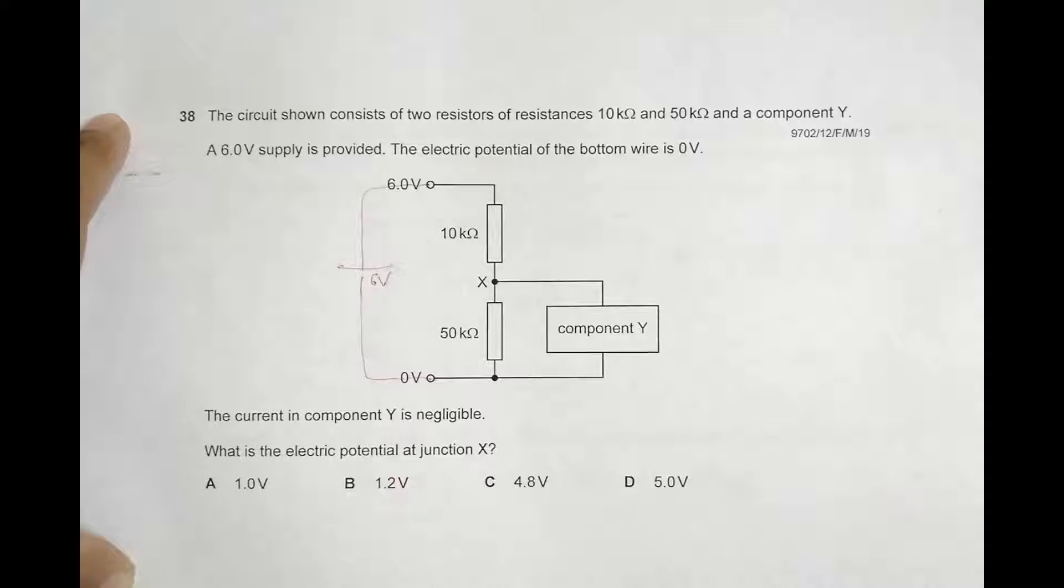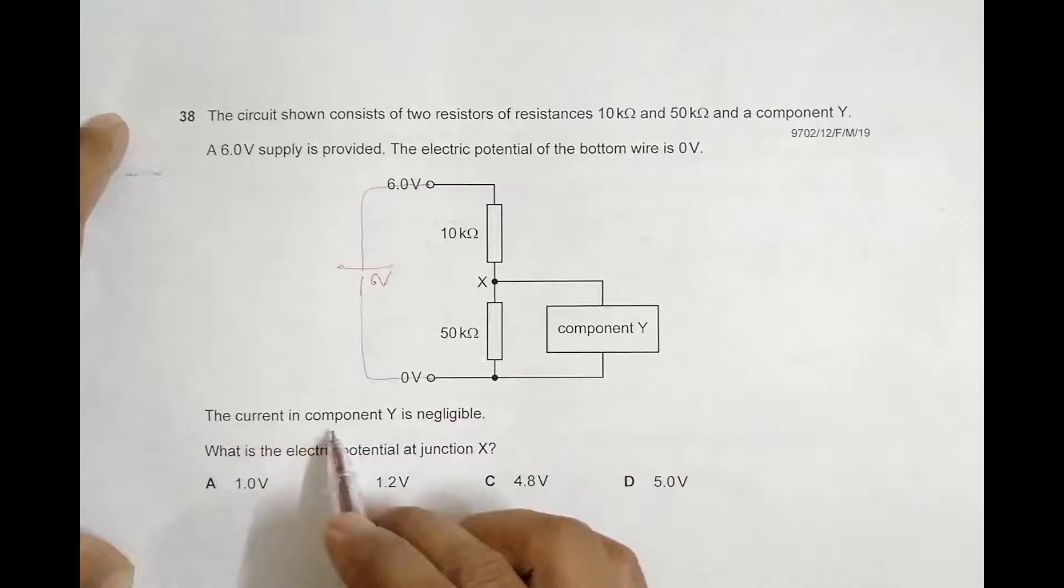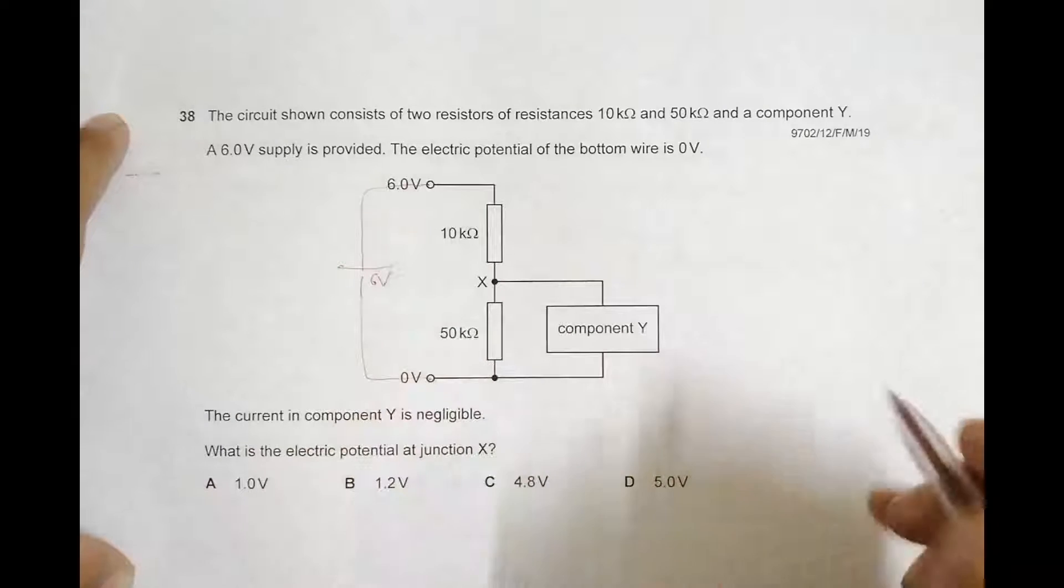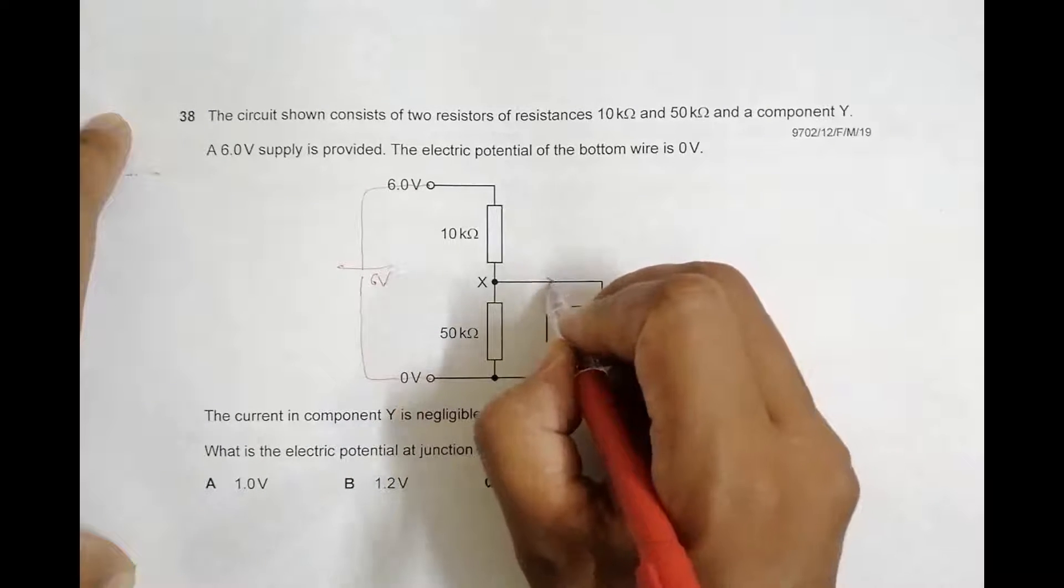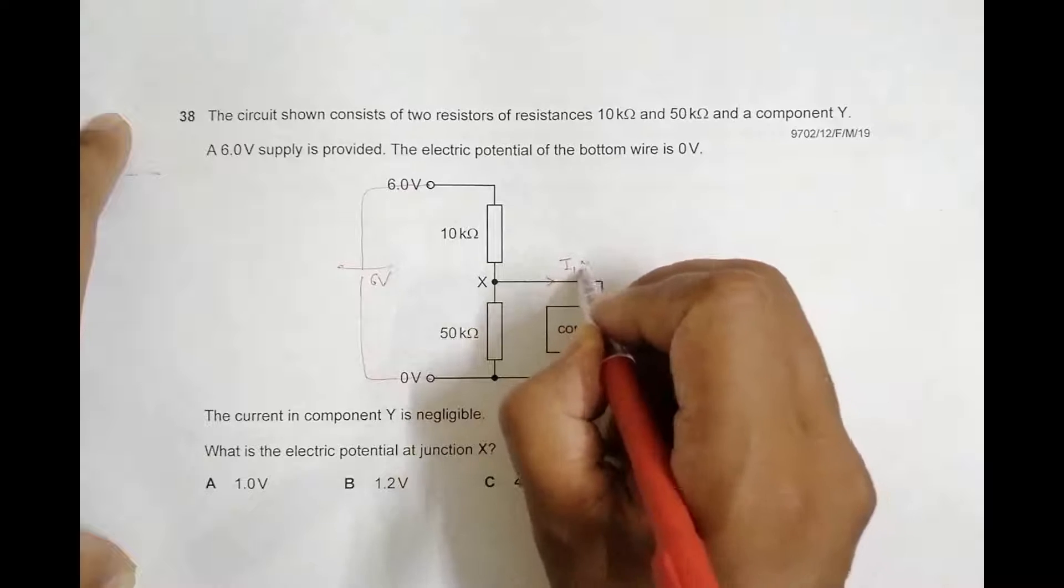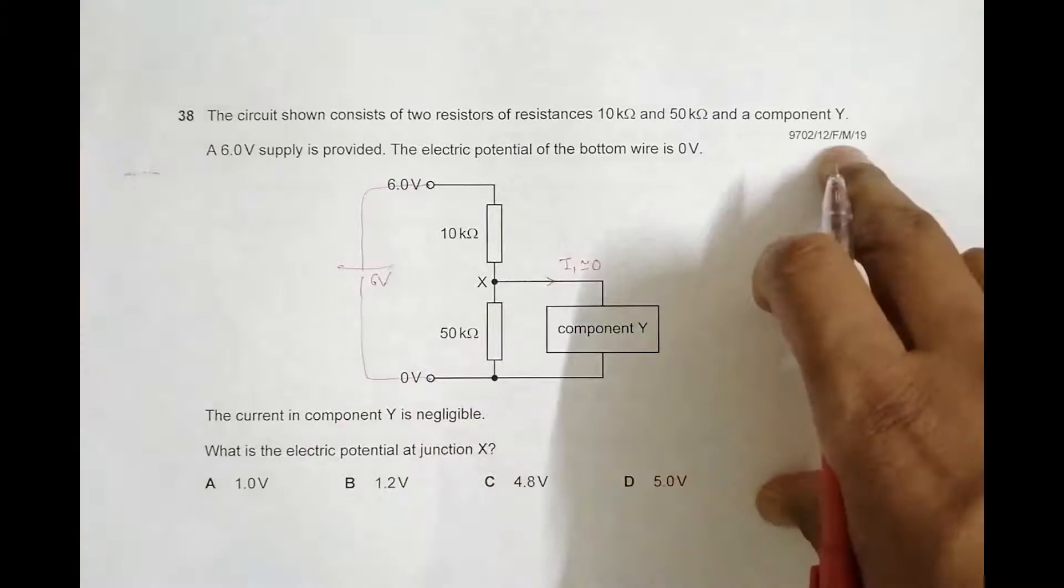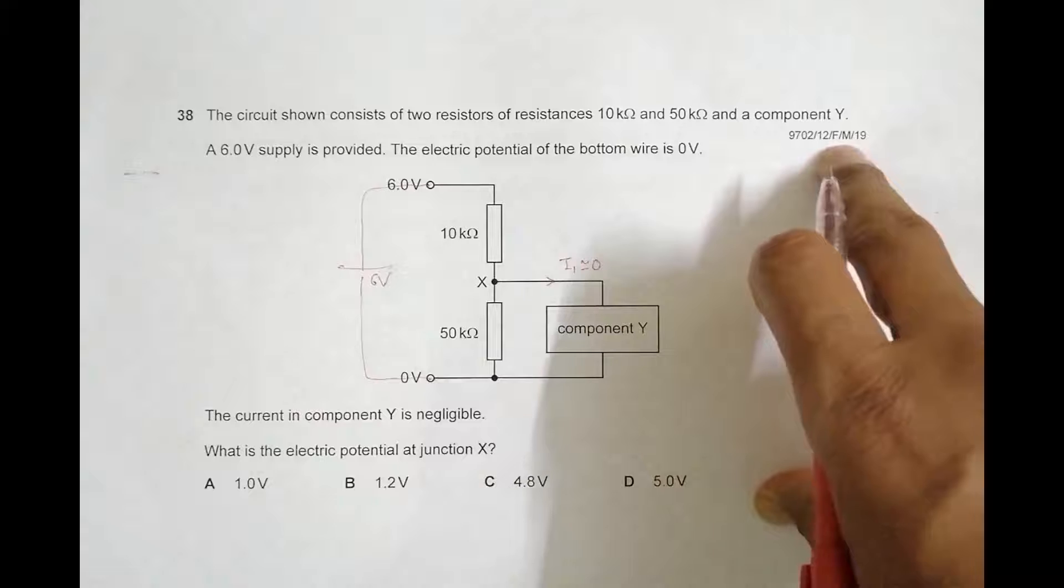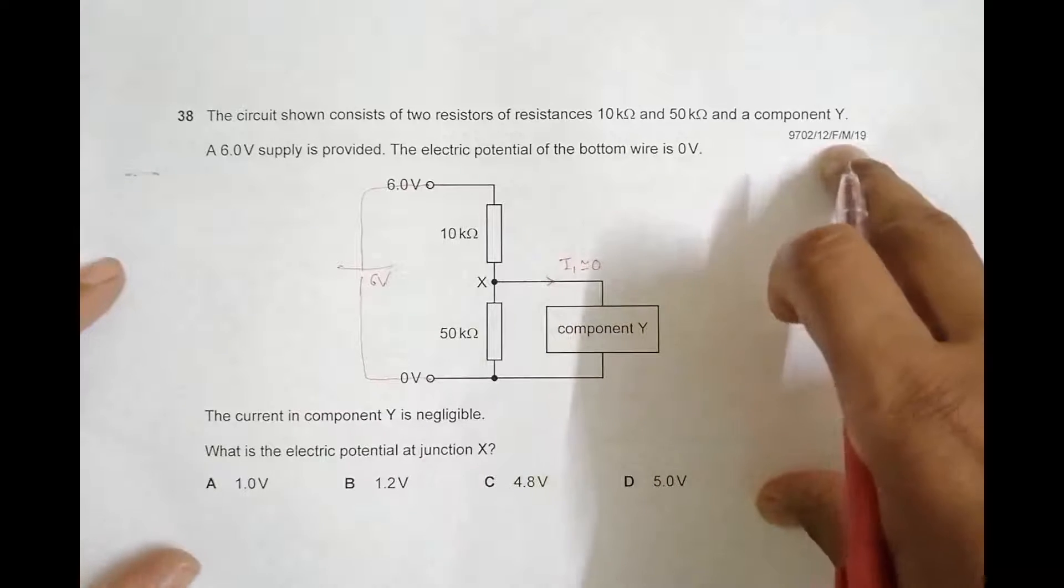The current in component Y is negligible. So when we have such an arrangement, the current here, I1, is nearly equal to 0. With that data, we have to find the value of electric potential at junction X.